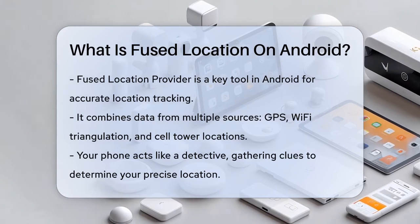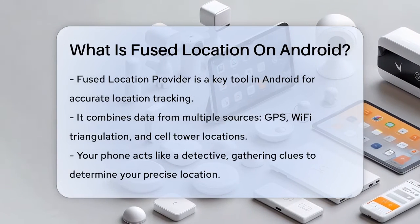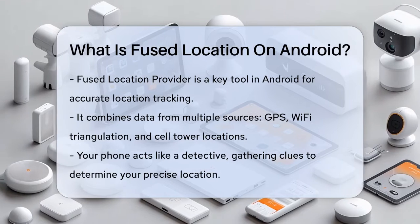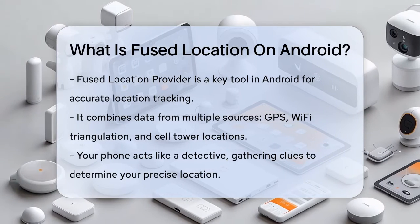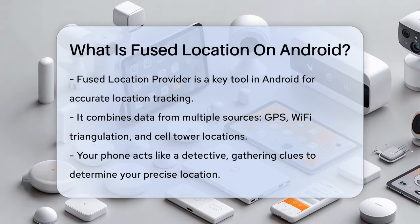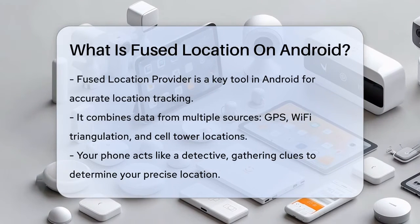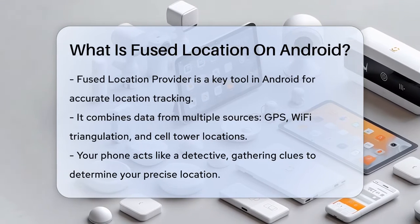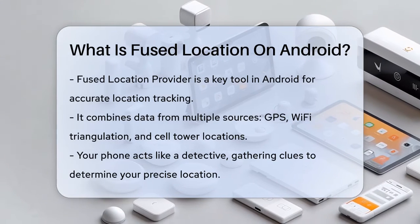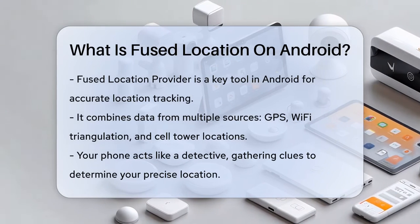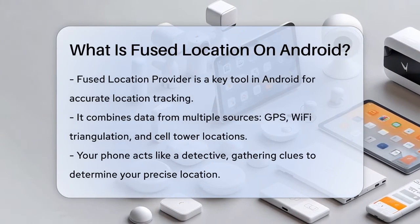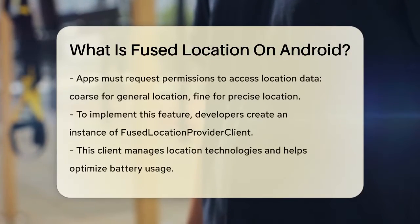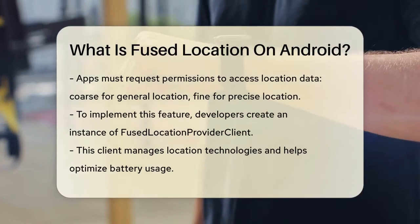Imagine your phone as a detective trying to figure out where you are. It uses clues from various sources like GPS, Wi-Fi triangulation, and cell tower locations. The Fused Location Provider is the brain that puts all these clues together to give you a precise location.